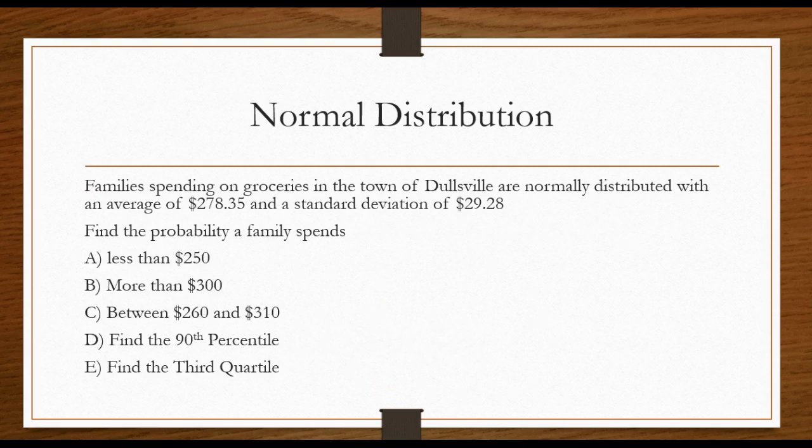Let's look at a typical problem with the normal distribution. Families spending on groceries in the town of Dullsville are normally distributed with an average of $278.35, and let's say that's probably per week or per month whatever, and a standard deviation of $29.28.